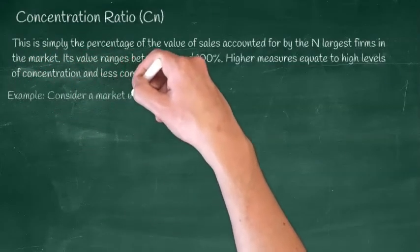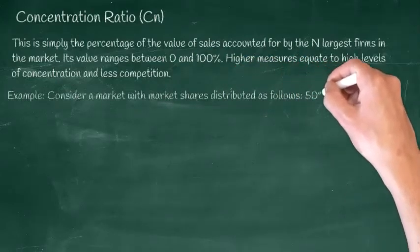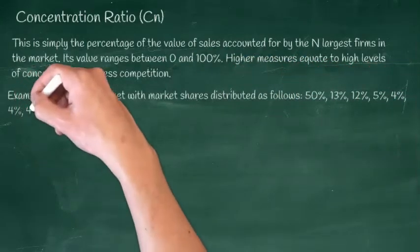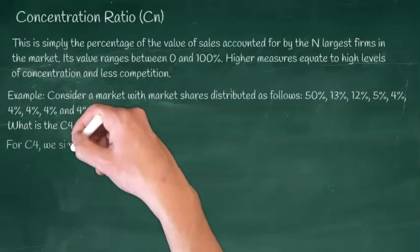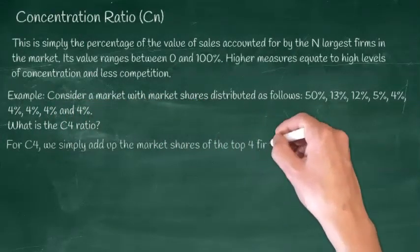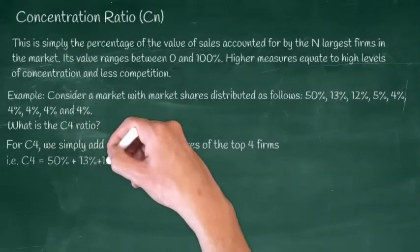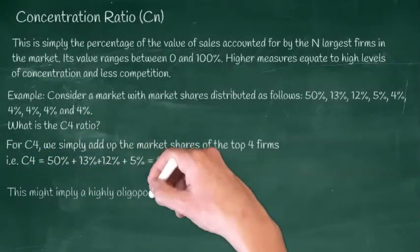Let us consider an example. Consider an industry with market shares distributed as follows. What in this case is a C4 ratio? Well, simply we add up the market shares of the top four firms and in this case we get 80%, which may imply a highly oligopolistic market.